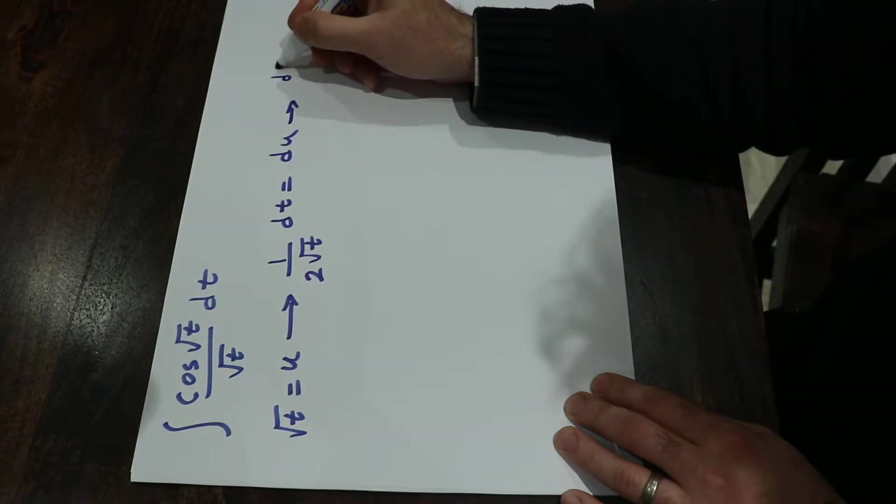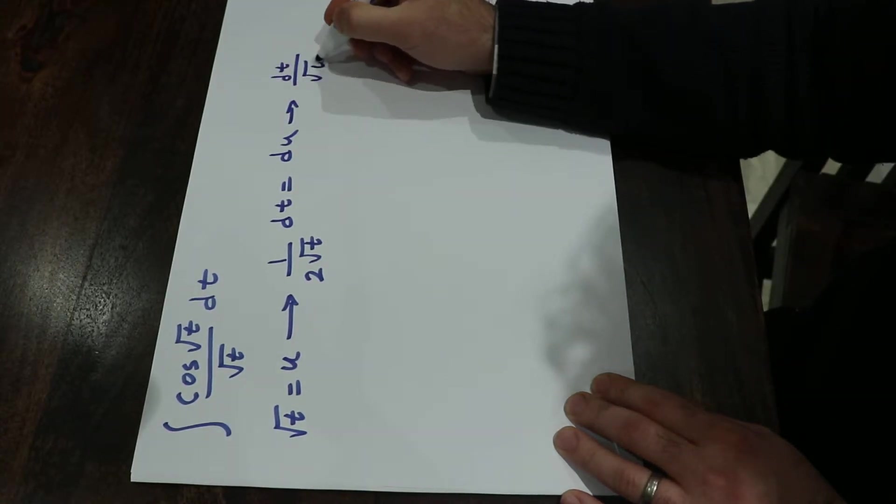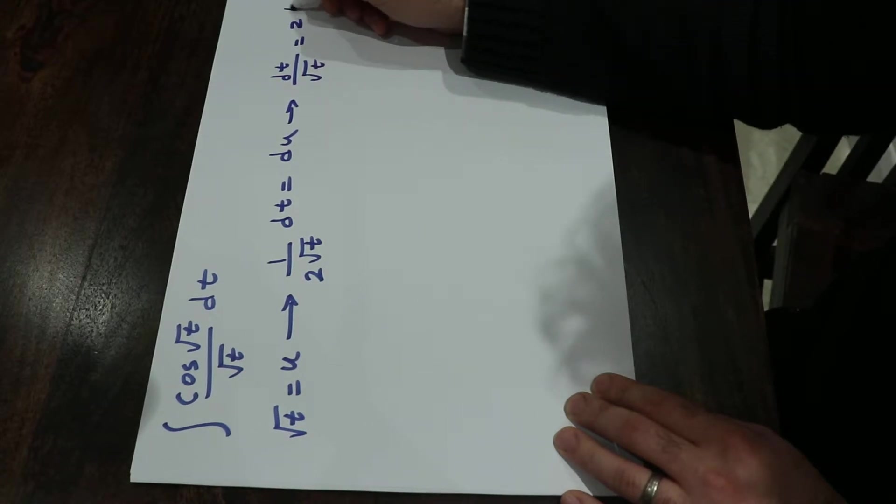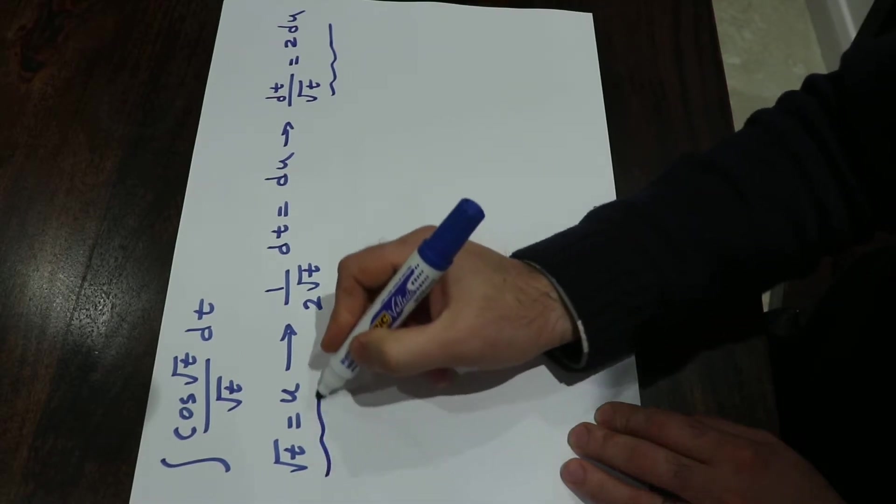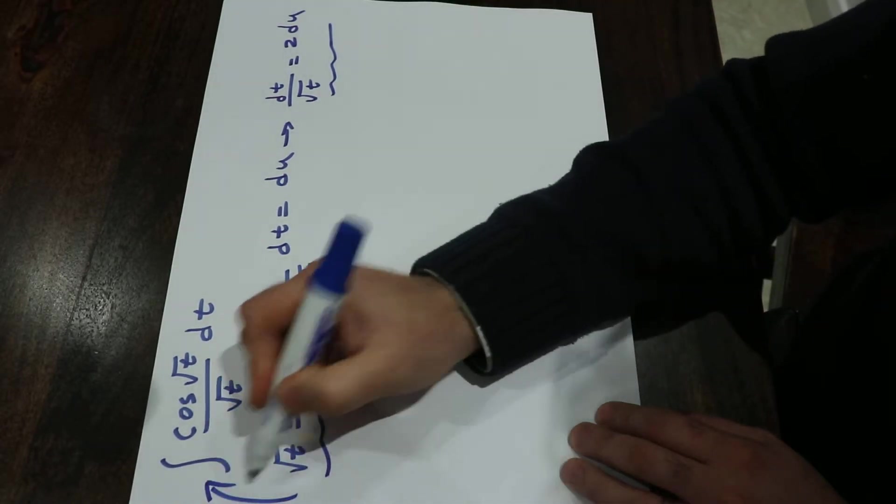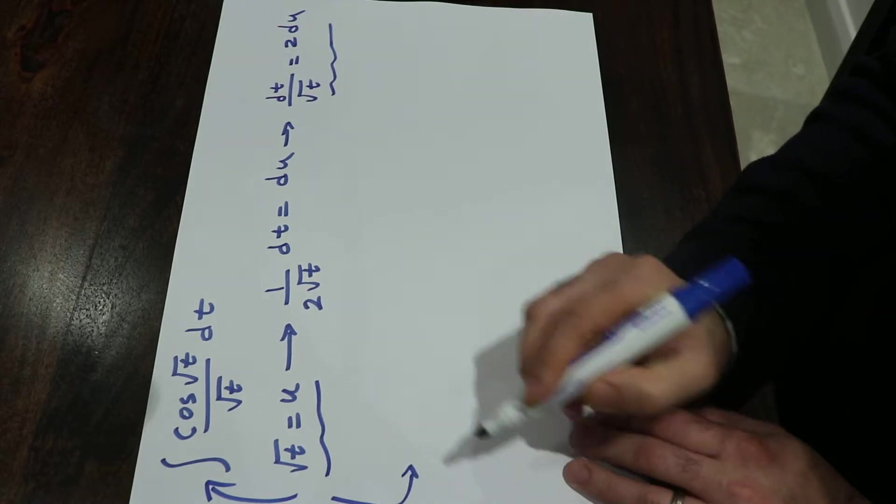In other words, dt divided by s square root of t will be equal to 2 du. So now if you substitute this function, this expression and this expression into the integral and rewrite the integral,